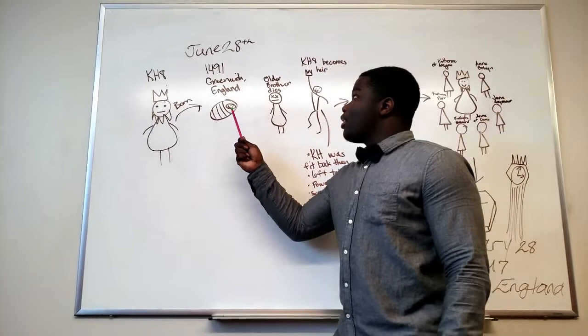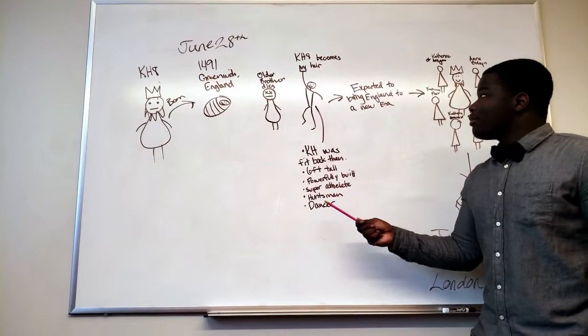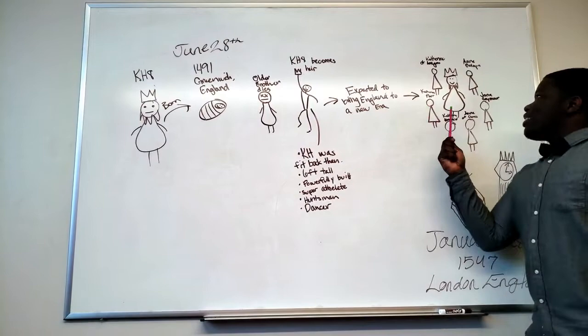King Henry VIII. He was born in 1491 in Greenwich, England. When his older brother died, King Henry became the next heir. King Henry was six feet tall, powerfully built, super athlete, huntsman, and a great handsome. He was expected to bring England to a new era.